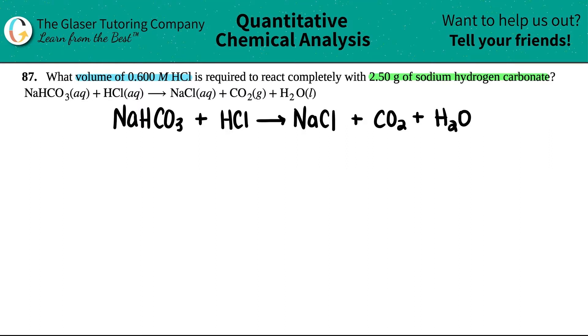So I'm going to write down what they gave me. They told me that I have 2.50 grams of sodium hydrogen carbonate. If I scan what's going on here, this is the sodium hydrogen carbonate. NaHCO3 is carbonate. So I have 2.50 grams of this. And they want to know what the volume of 0.6 molarity of HCl. So we have 0.600 molarity, and we need to know the volume.